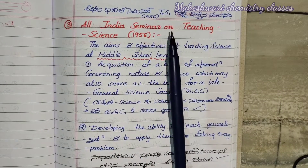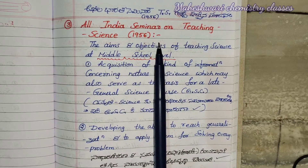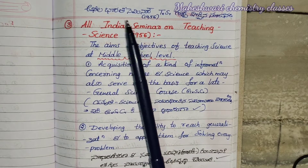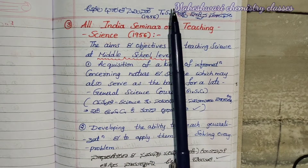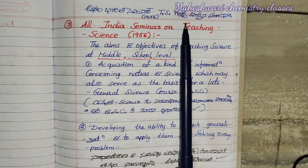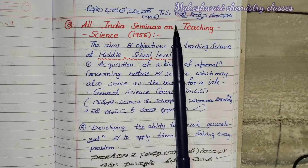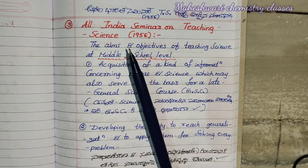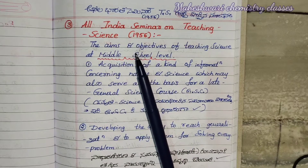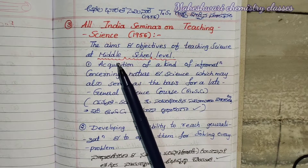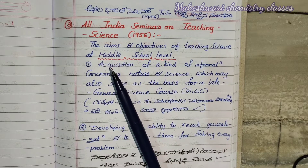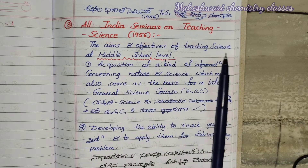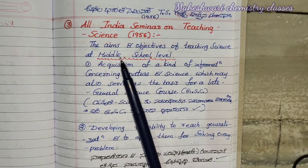Third one: All India Seminar on Teaching Science, 1956. The aims and objectives of teaching science at middle school level.